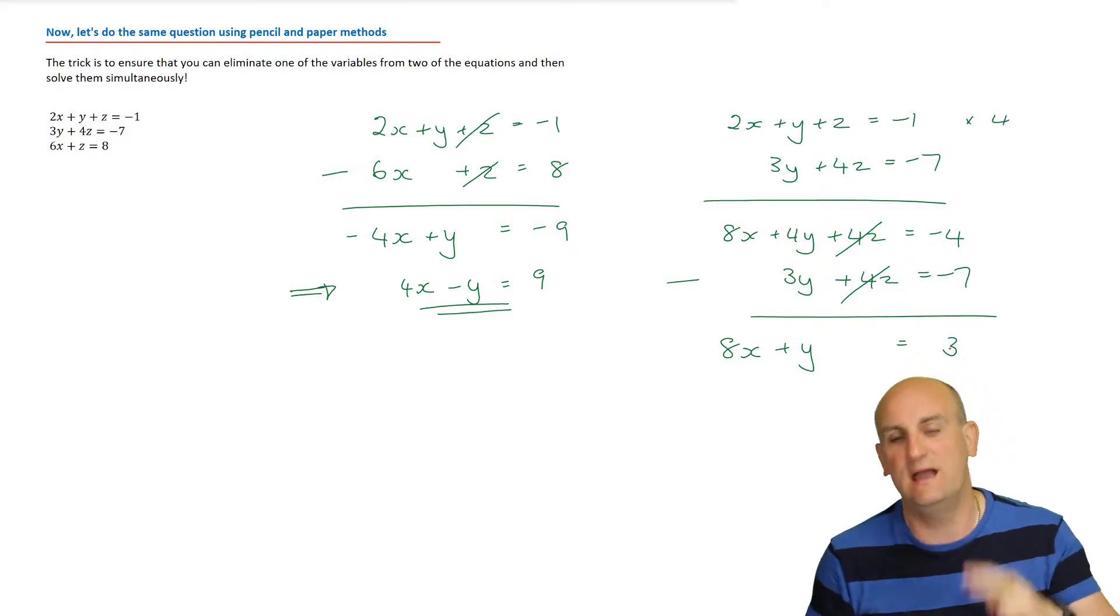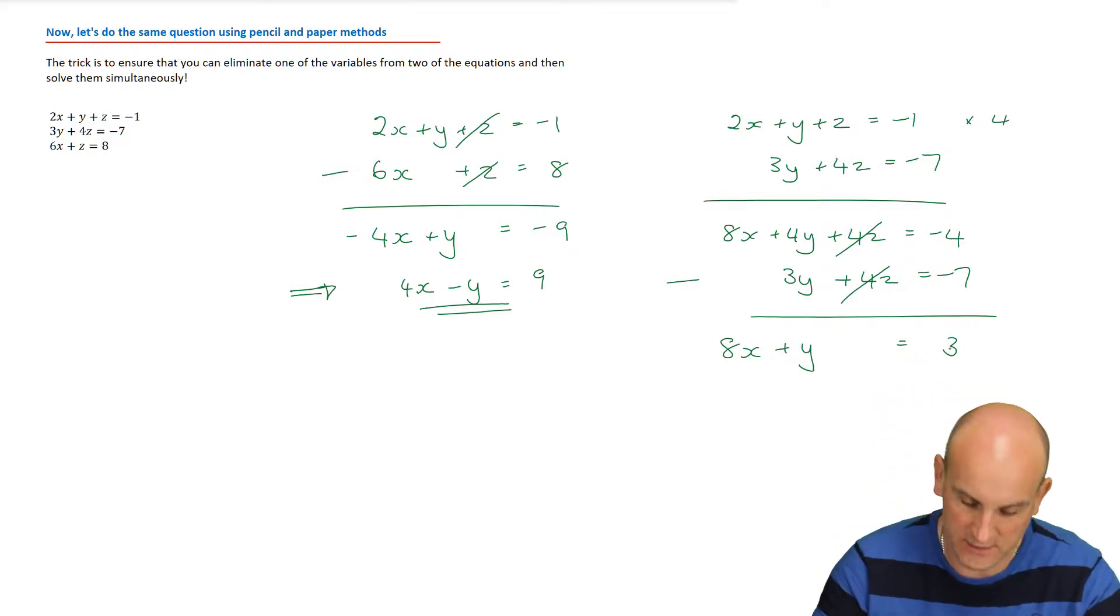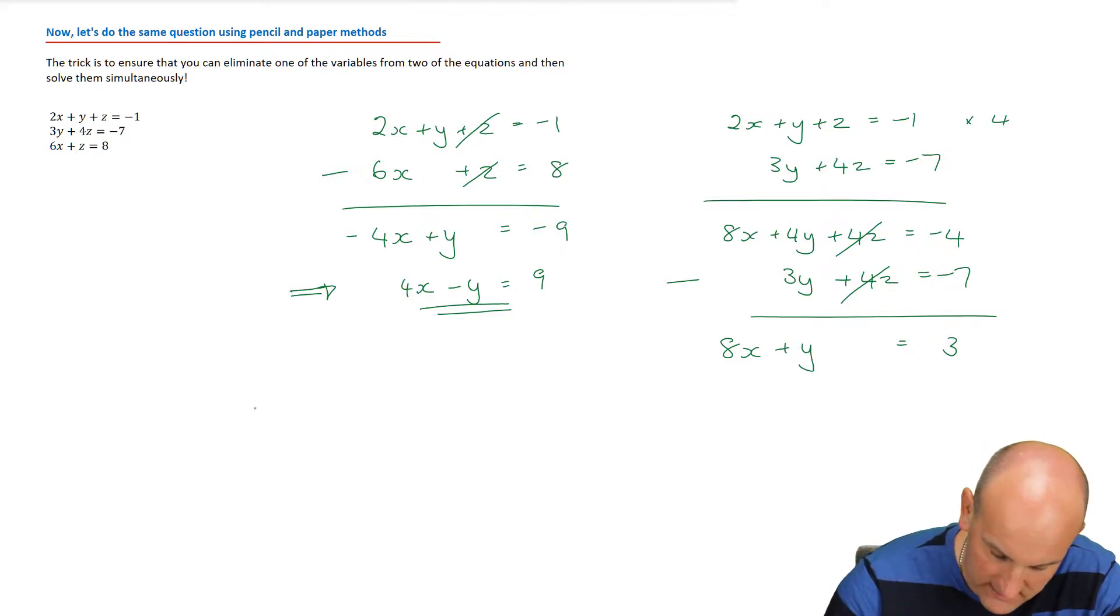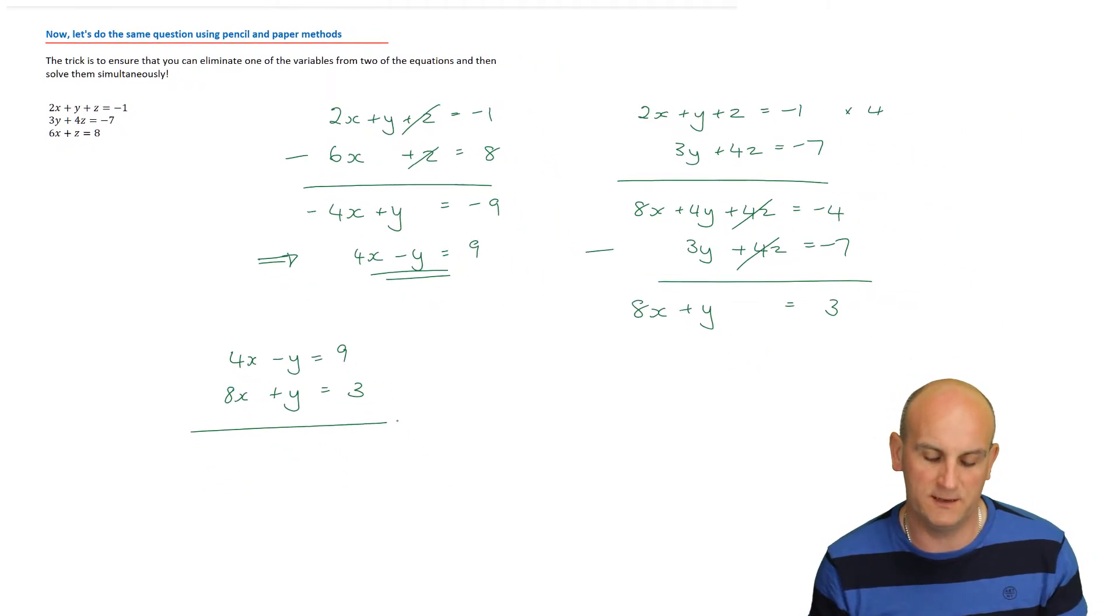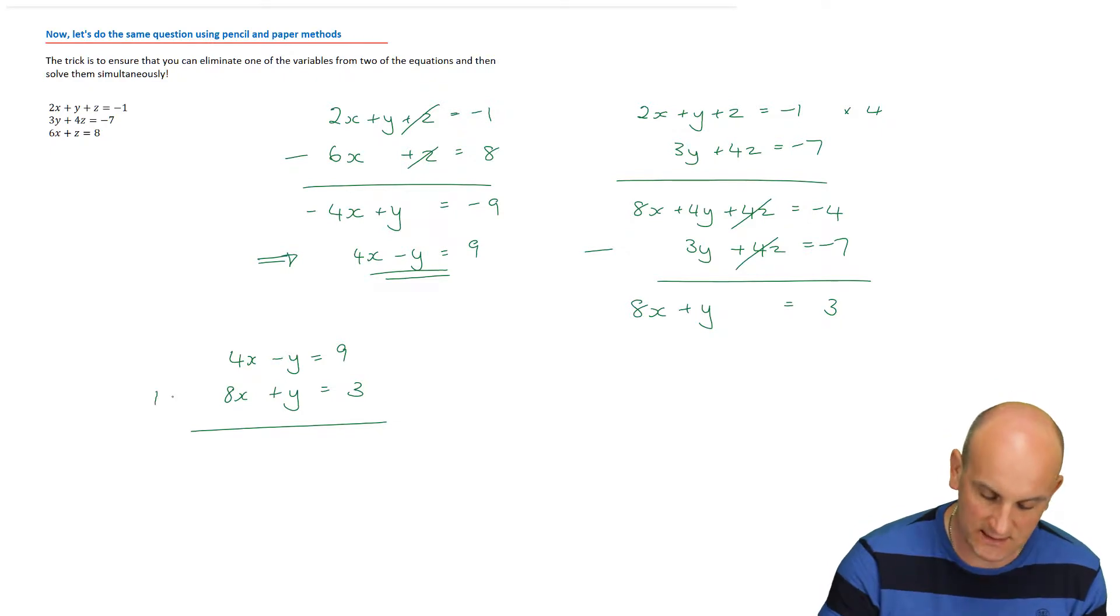I'm actually going to multiply that one by 4. The trick here is I've got to eliminate the z's. This equation is in terms of x and y, so I need to have another equation in terms of x and y. Rewriting these equations gives me 8x plus 4y plus 4z equals negative 4, and this one stays as 3y plus 4z equals negative 7. A positive and a positive would normally be a positive, so I'm going to subtract the two of them. 8x minus 0 gives me 8x, 4y minus 3y gives me plus y, and negative 4 minus negative 7 gives me 3. I have two equations, two unknowns. Simultaneous equations.